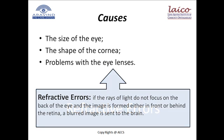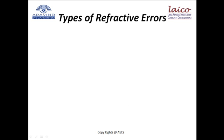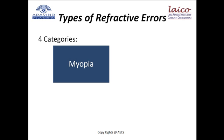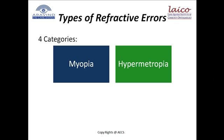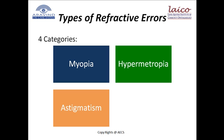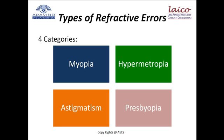If the rays of light do not focus on the back of the eye and the image is formed either in front or behind the retina, a blurred image is sent to the brain. There are four types of refractive errors: myopia, hypermetropia, astigmatism, and presbyopia. Let's explore each one of them.